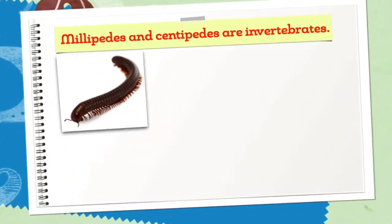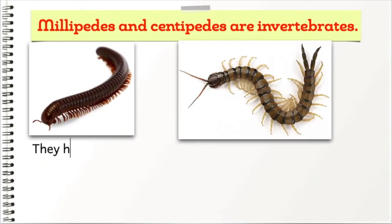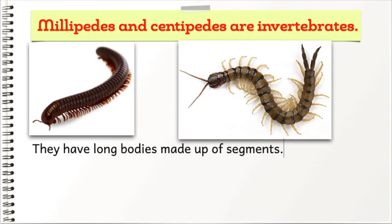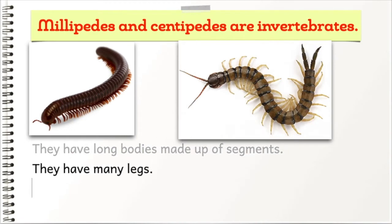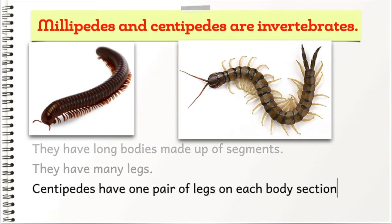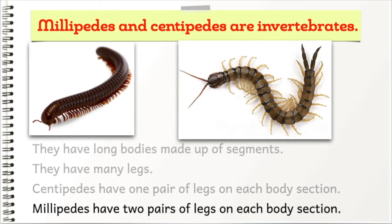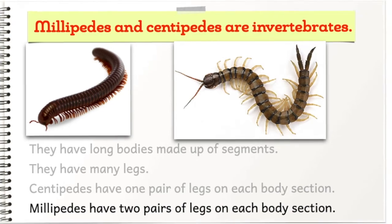Millipedes and centipedes are invertebrates. They have long bodies made up of segments and they have many legs. Centipedes have one pair of legs on each body section. Millipedes have two pairs of legs on each body section.